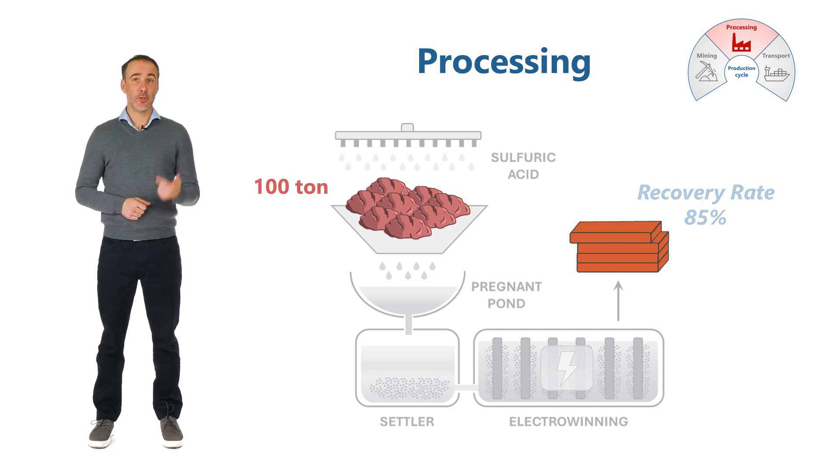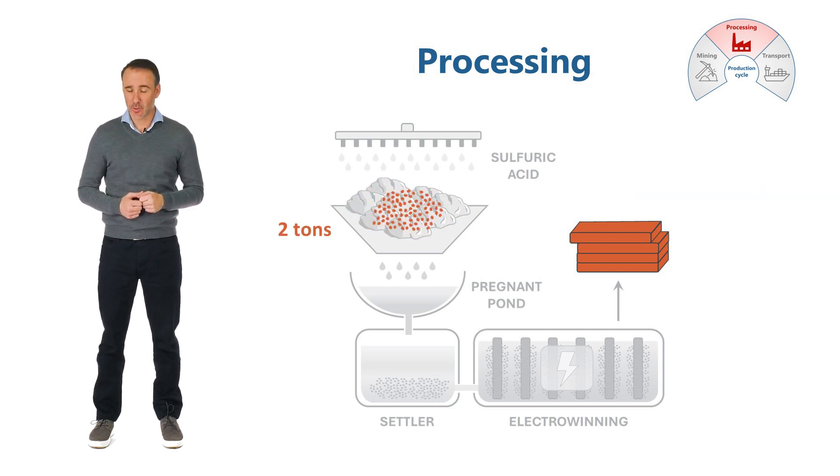100 tons of ore with 2 tons of contained copper is processed, but we only produce 85% times 2 tons, or 1.7 tons of copper. That leaves 98.3 tons of waste material from the ore.